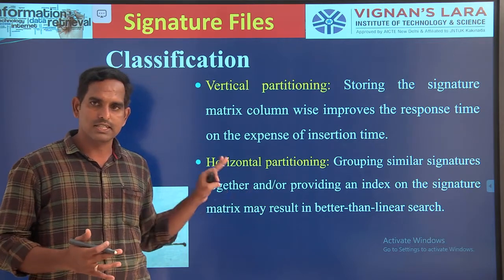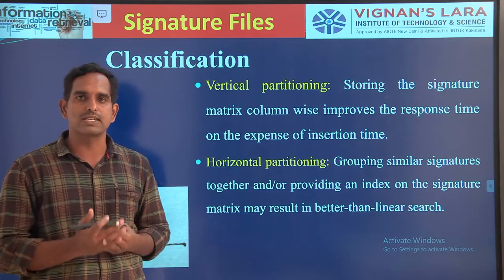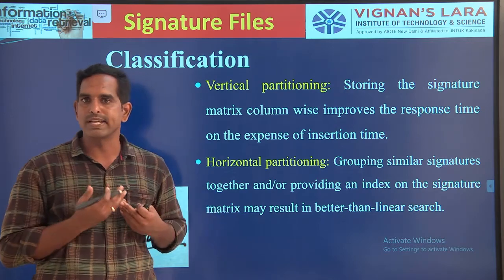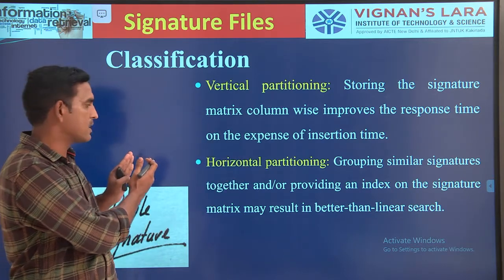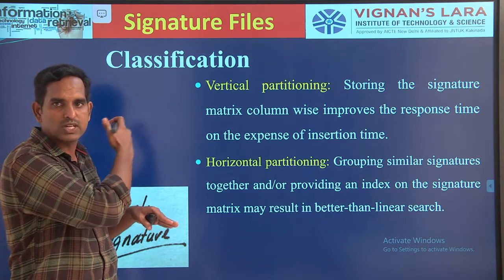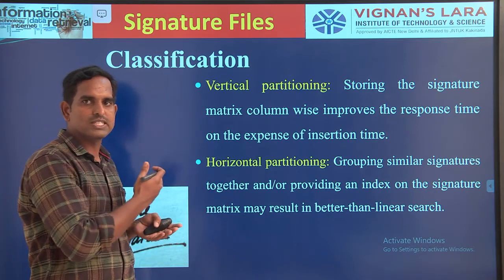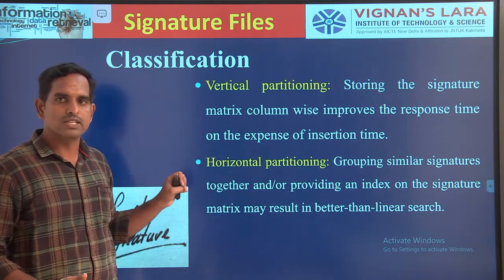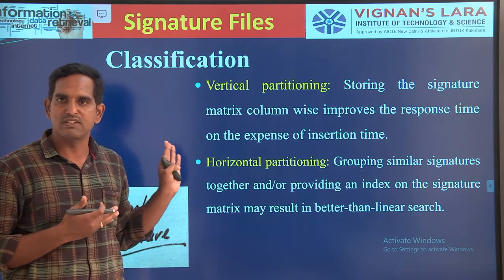The third method is horizontal partitioning, which will group similar signatures into one, and instead of providing an index to the original thing, we will be providing an index to the groupings. We will have our basic signature file, and from that we will perform horizontal partitioning, grouping similar signatures into separate groups. We will create an index for these groupings instead of for the original signature file. Whenever you have an original signature file, you have to do a sequential linear search, but searching in horizontal partitioning files will be much faster.